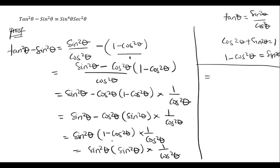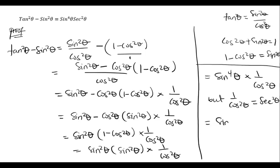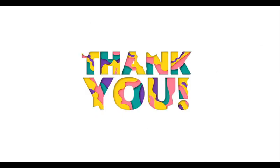Sin squared theta multiplied by sin squared theta gives sine to the power four theta, multiplied by one over cos squared theta. Since one over cos squared theta equals sec squared theta, we have sine to the power four theta times sec squared theta, as required by the question. This is the proof of tan squared theta minus sin squared theta. Thank you so much for watching, and I'll see you in the next video. If you're not yet a subscriber, kindly consider subscribing and pressing the notification button.